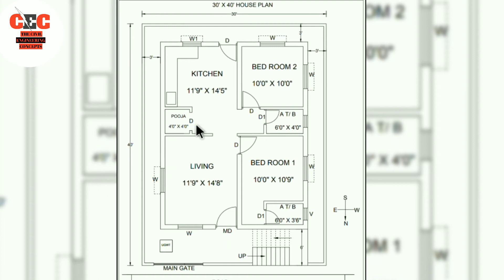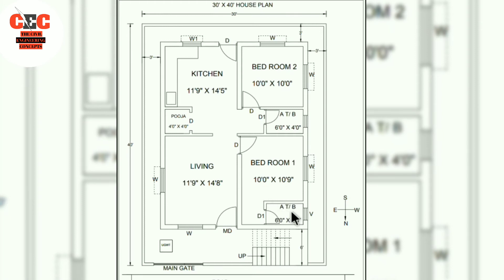There are two bedrooms in this house plan — one is the master bedroom and the other is a normal bedroom. The size of the master bedroom is 10 feet by 10 feet 9 inches. In the northwest corner, an attached toilet and bath is provided. The size of the toilet and bath is 6 feet by 3 feet 6 inches.